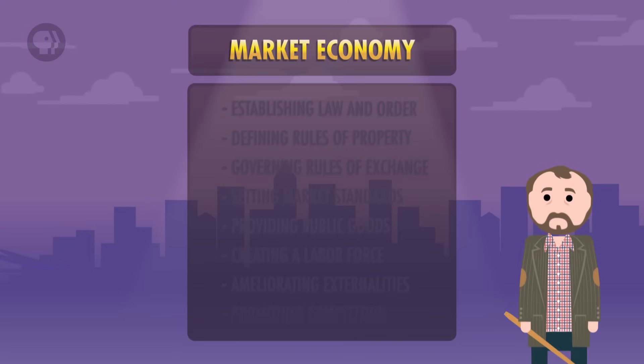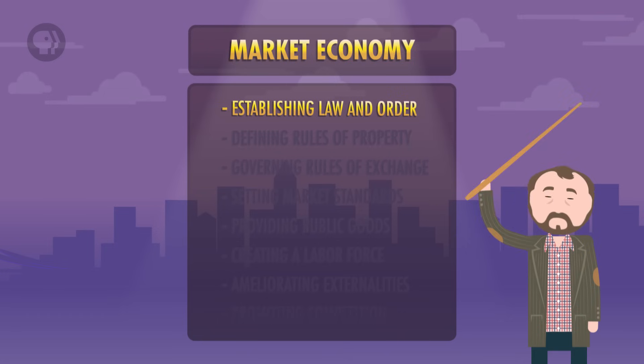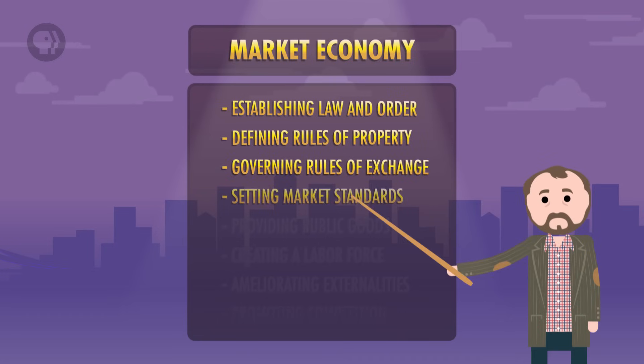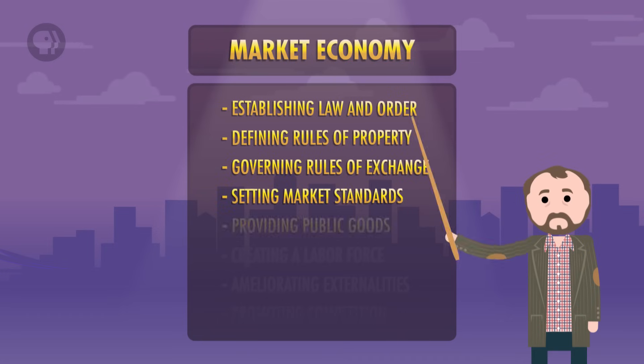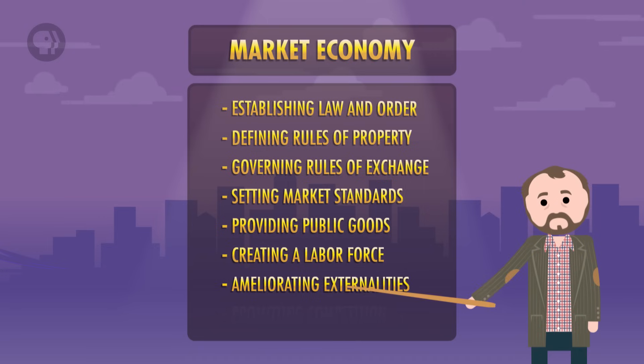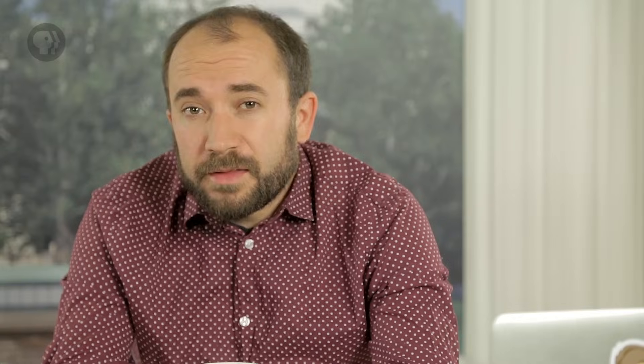Economically-minded political scientists and politically-minded economists will tell you that there are a number of ways that government structures the economy in the US. I'm going to go over eight of them, although there might be more. So in no particular order: the government creates and maintains a market economy by establishing law and order, defining rules of property, governing rules of exchange, setting market standards, providing public goods, creating a labor force, ameliorating externalities, and promoting competition.